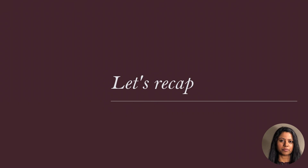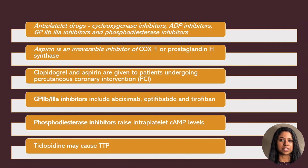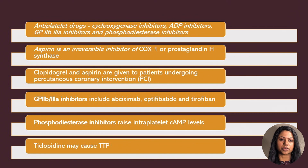Let's recap the important points. There are four classes of antiplatelet drugs: cyclooxygenase inhibitors, ADP inhibitors, glycoprotein 2b3a inhibitors, and phosphodiesterase inhibitors. Aspirin is an irreversible inhibitor of the enzyme COX-1 or prostaglandin H synthase and is given along with clopidogrel in patients undergoing percutaneous coronary interventions. The glycoprotein 2b3a inhibitors include abciximab, eptifibatide, and tirofiban. Ticlopidine is associated with TTP or thrombotic thrombocytopenic purpura. Phosphodiesterase inhibitors raise intraplatelet cAMP levels.